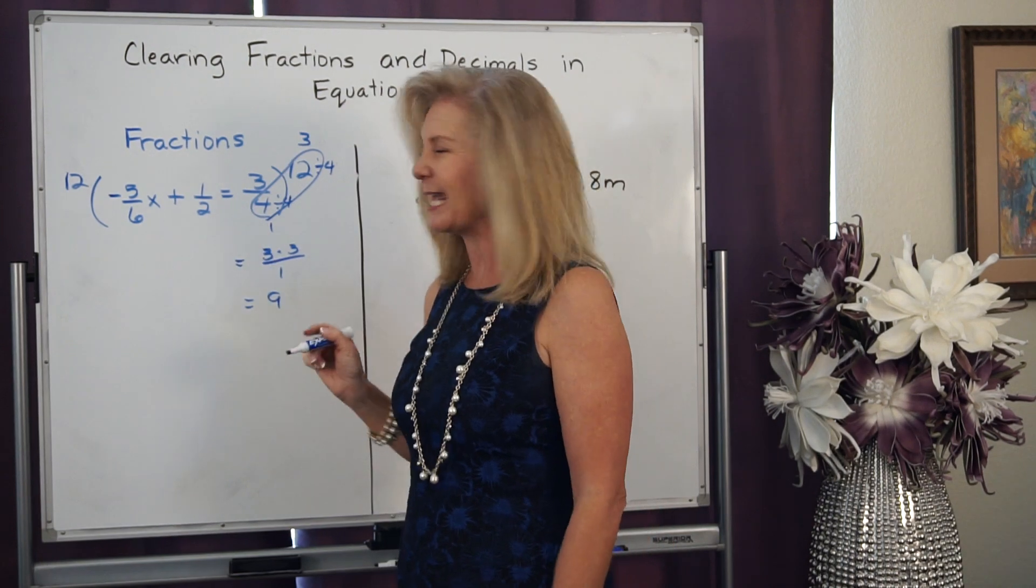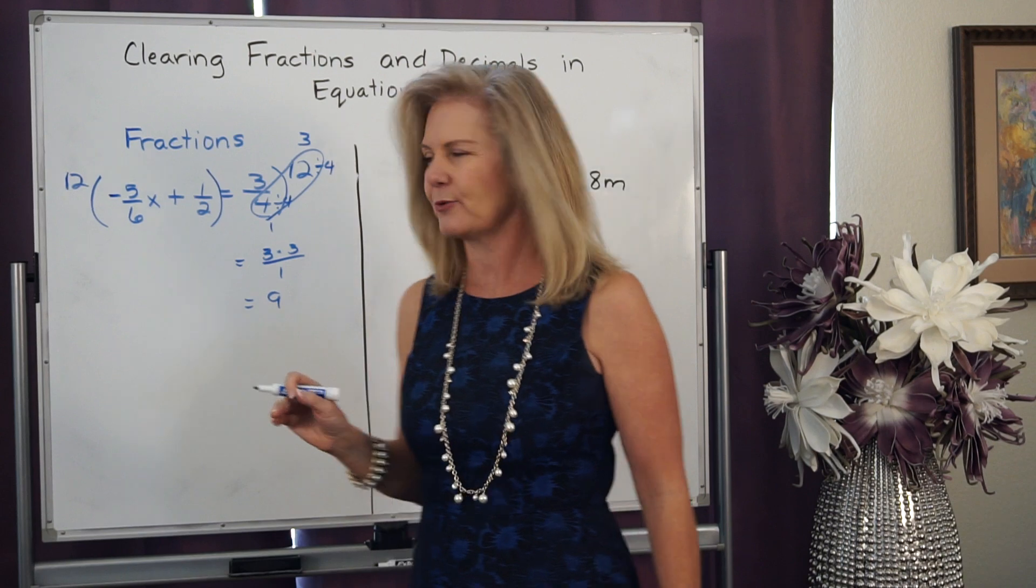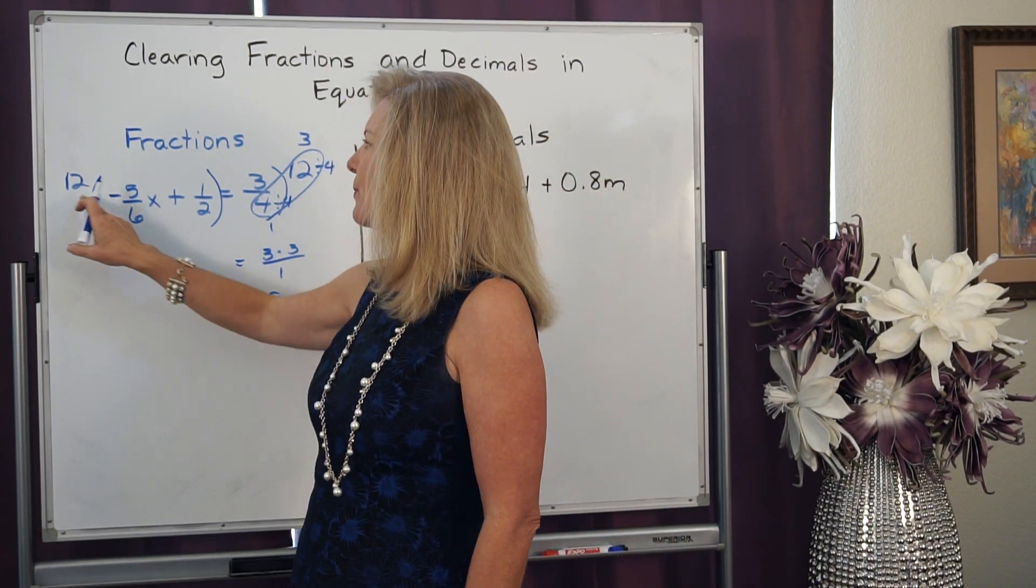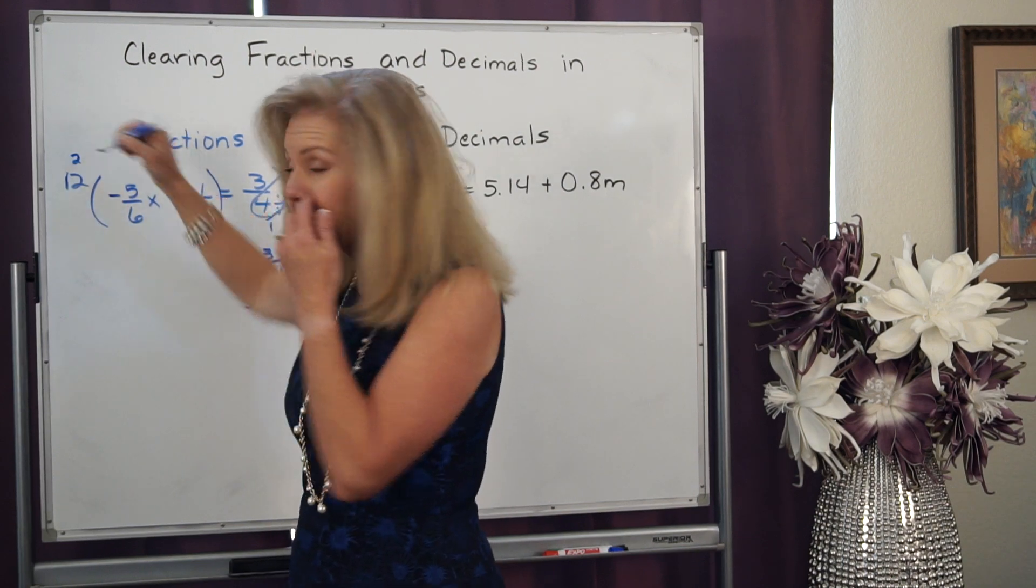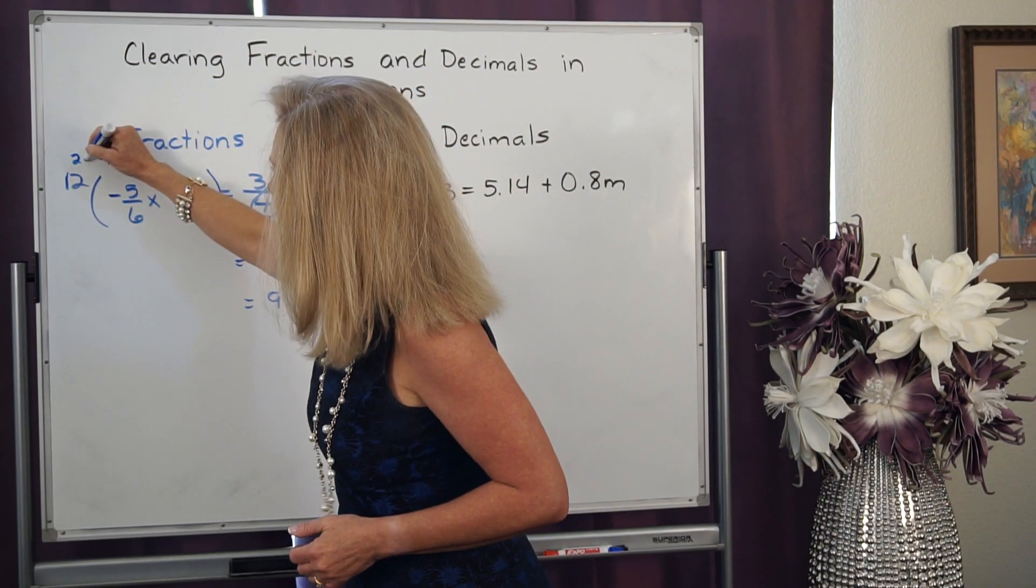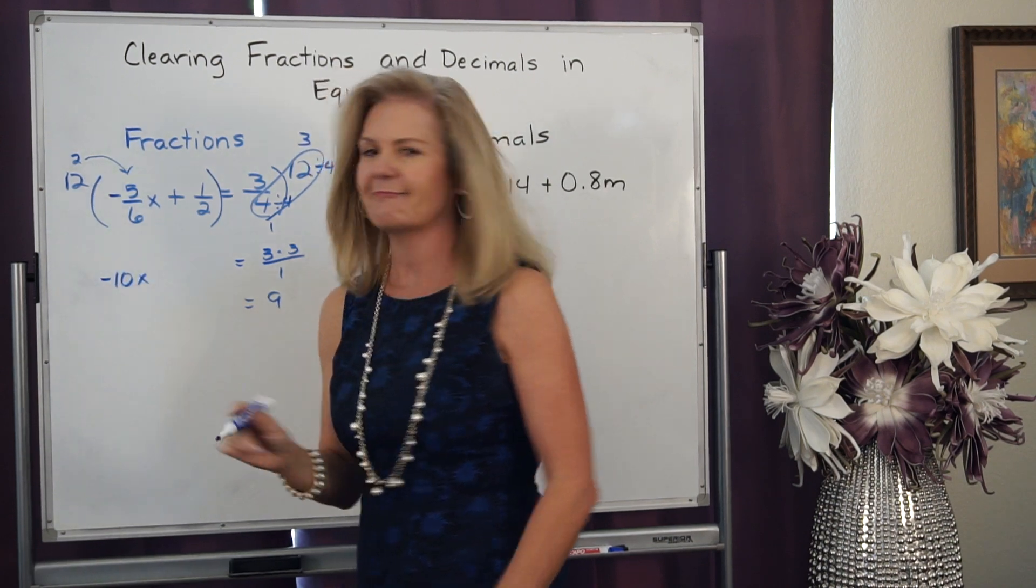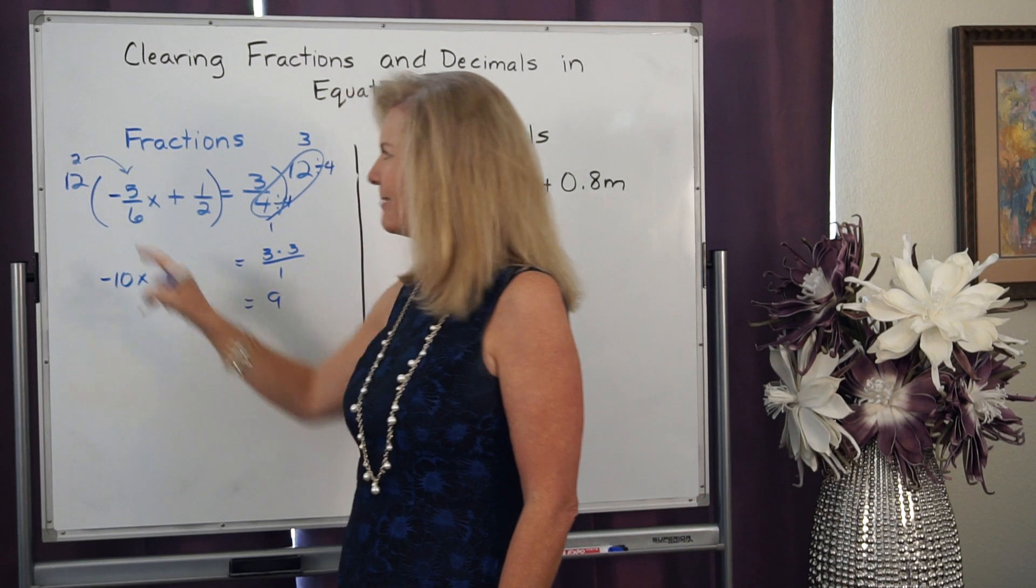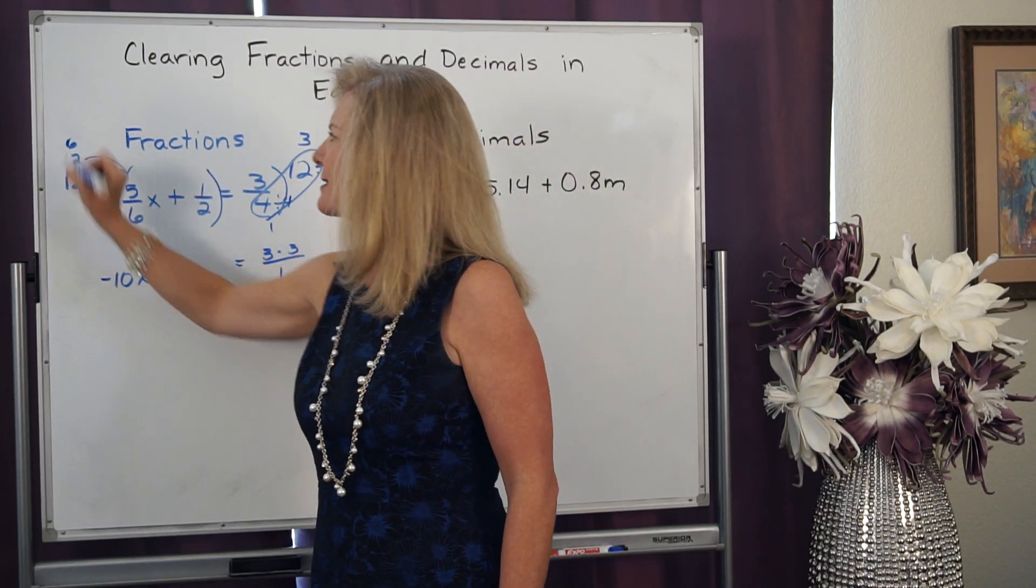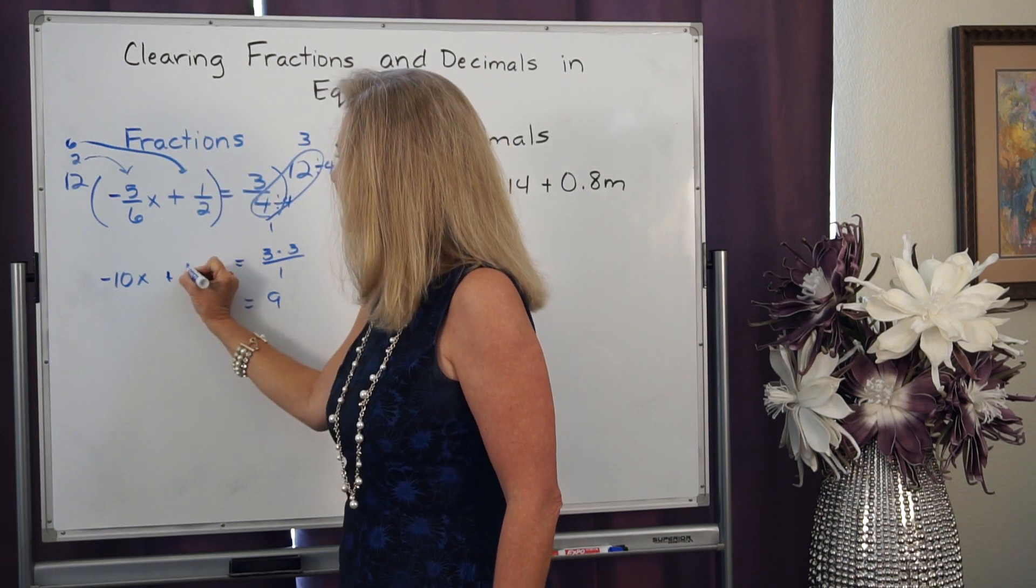So I can do the same thing on this side. Now, this side, the way I look at it is I take each one individually. And I think to myself, 12 divided by 6 is 2. And now it's like distributive property. And I do 2 times negative 5 is negative 10x. I just got rid of that fraction. Now, I keep that addition sign, and I do 12 divided by 2 is 6. And then it's 6 times 1 is 6.